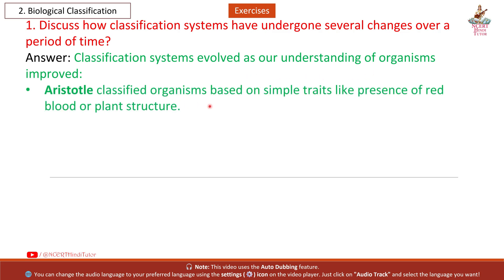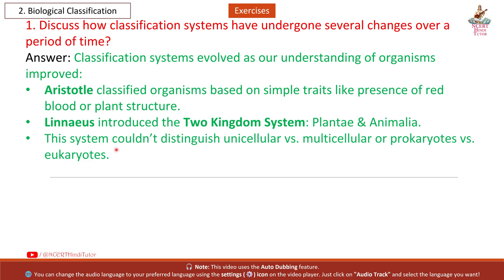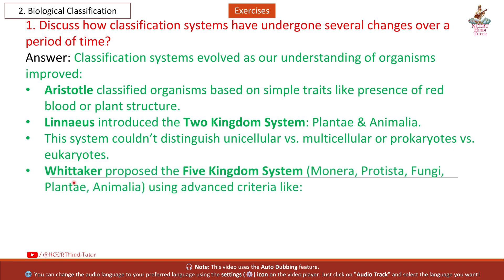Aristotle classified organisms based on simple traits like presence of red blood or plant structure. Linnaeus introduced the two-kingdom system: Plantae and Animalia. This system couldn't distinguish unicellular versus multicellular, or prokaryotes versus eukaryotes.